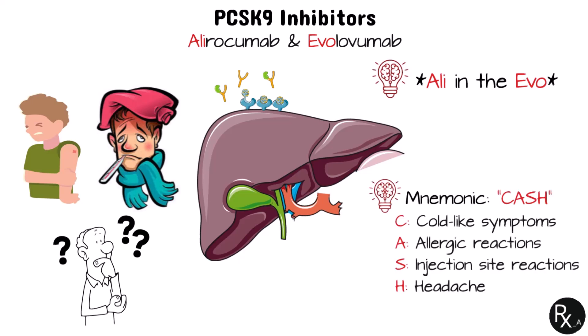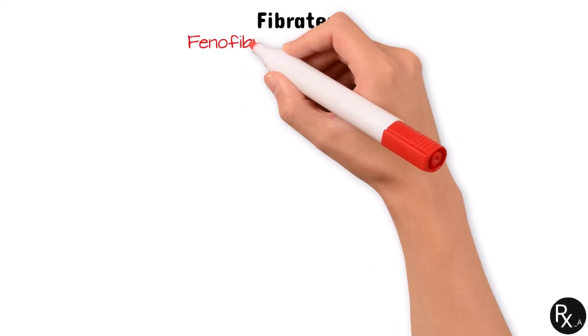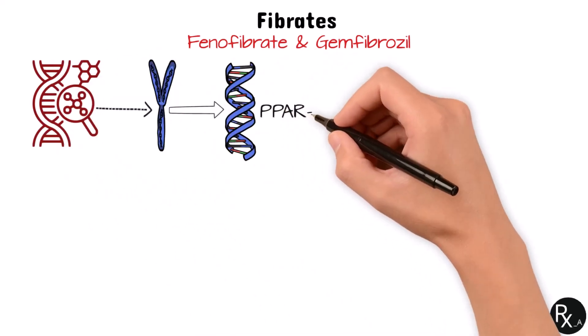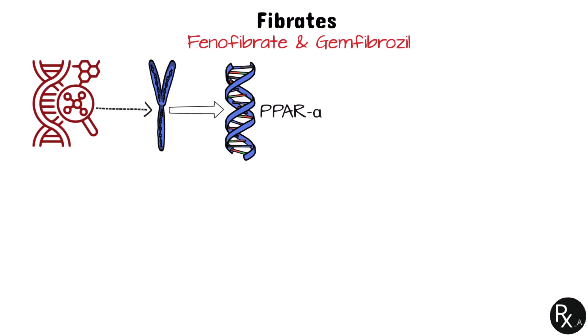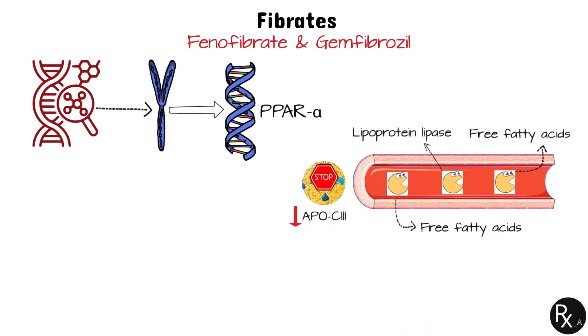Remember the term CASH to easily recall these adverse effects. Now let's discuss fibrates, another class of medications that decrease cholesterol. Fenofibrate and gemfibrozil are two medications that belong within this category. Peroxisome proliferator-activated receptor alpha, or PPAR alpha, is a nuclear transcription receptor that is mostly activated by fibrates. It is present in metabolically active tissues like the liver and adipose tissue. Activation or suppression of specific genes that code for lipid metabolism-related proteins is caused by fibrates binding to PPAR alpha.